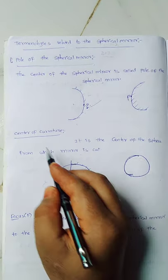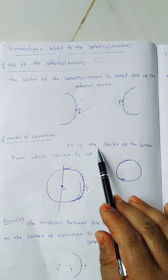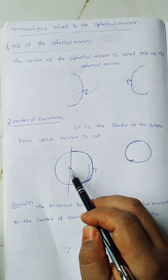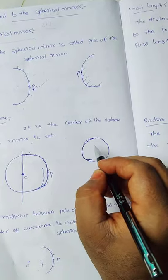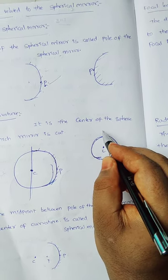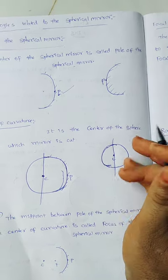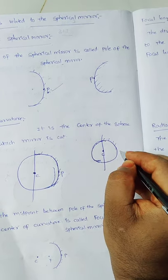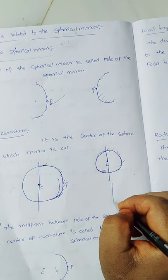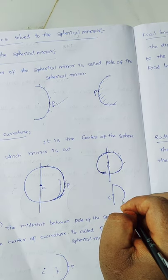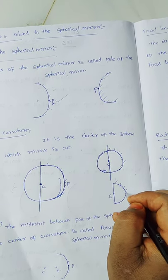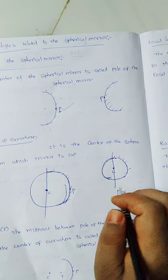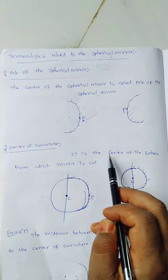The second terminology is the center of curvature. The center of curvature is the center of the sphere from which the mirror is cut. For example, take a sphere and cut a half portion — it becomes a half sphere. If you take the outer lines of that half, it becomes a concave mirror, because the inside surface is the reflecting surface and the outside surface is silver-coated. The center of that original sphere is the center of curvature.